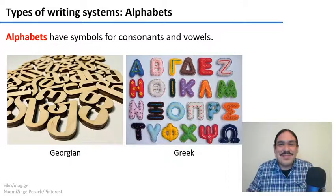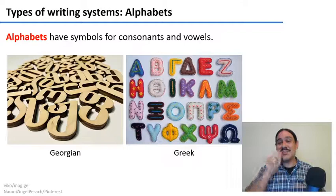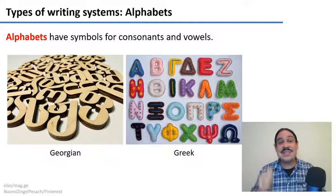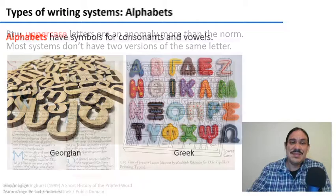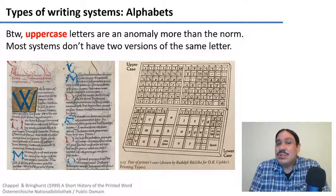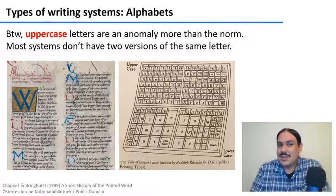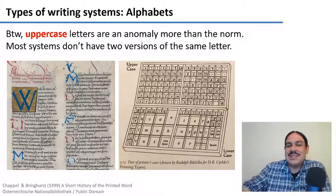You know an alphabet — you use one every day. Alphabets have consonants and vowels, and sometimes diacritics to indicate stress, like in Spanish. There are many different alphabets in the world, such as Greek and Georgian. The Roman alphabet, the one we use for English and Spanish, is very unusual in that it has an anomaly: uppercase letters, which are not very common. It's not common to have two versions of the same letter.